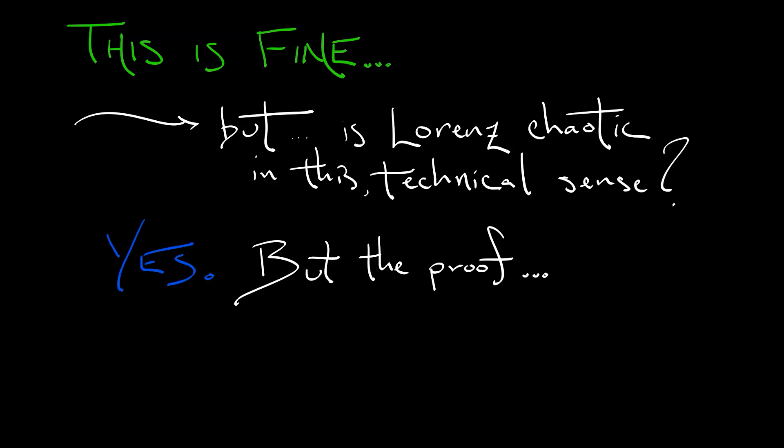Topological transitivity, that's a little bit harder to see. I'm not sure how I would go about showing that. And wait a minute, what was that last one?